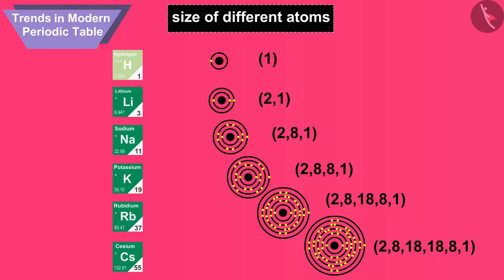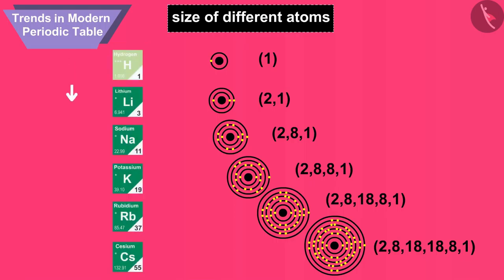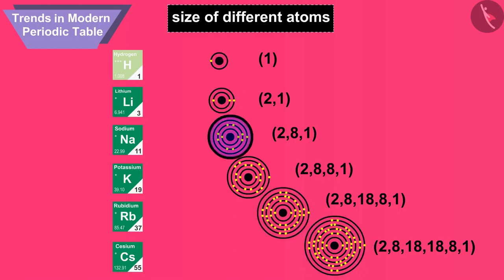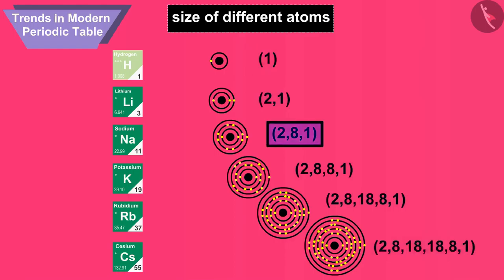Let us see the reason behind this trend. When we move from top to bottom in a group of the periodic table, a new shell of electrons is added to the atoms at every step. In this way, the number of electron shells in the atoms increases gradually, due to which the size of atoms also increases.